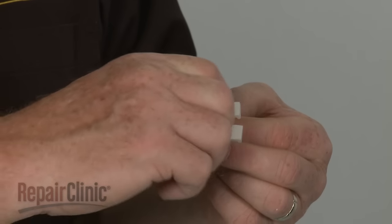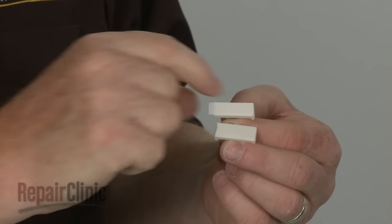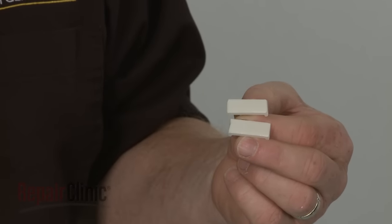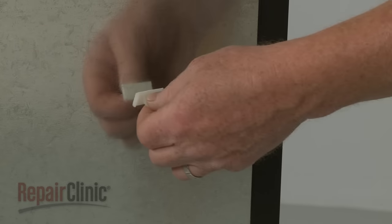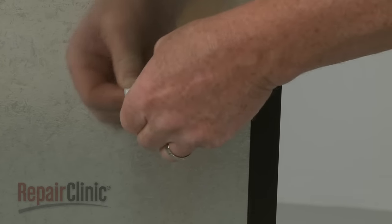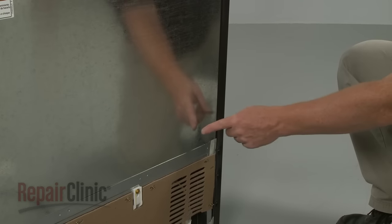Next, peel the backing from the two tubing retaining clips to expose the adhesive. Align the clips on the right side of the rear panel. Space them near the middle of the panel for side-by-side models or when the freezer is on top, and the lower portion of the panel when the freezer is on the bottom.